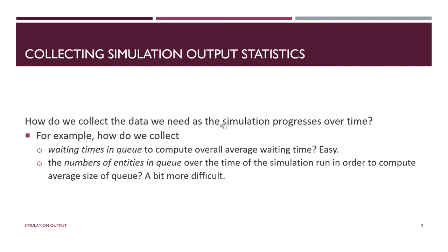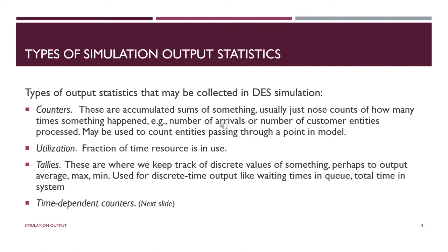Here you see the different categories of statistics we might be collecting during a simulation run, organized by the way they're collected. Counters are just head counts or nose counts, like number of arrivals, the number of times something happened, number of times a particular event occurred, number of entities processed. This may be used to count entities passing through a particular point in the model, like maybe the exit.